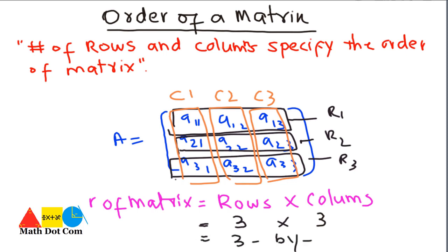So the order of a matrix is 3 into 3 or you can also write it as 3 by 3. This is the order of a matrix. Whenever you want to find the order of a matrix, you have to multiply the rows by columns by keeping in mind that the rows will be written first and then the columns.